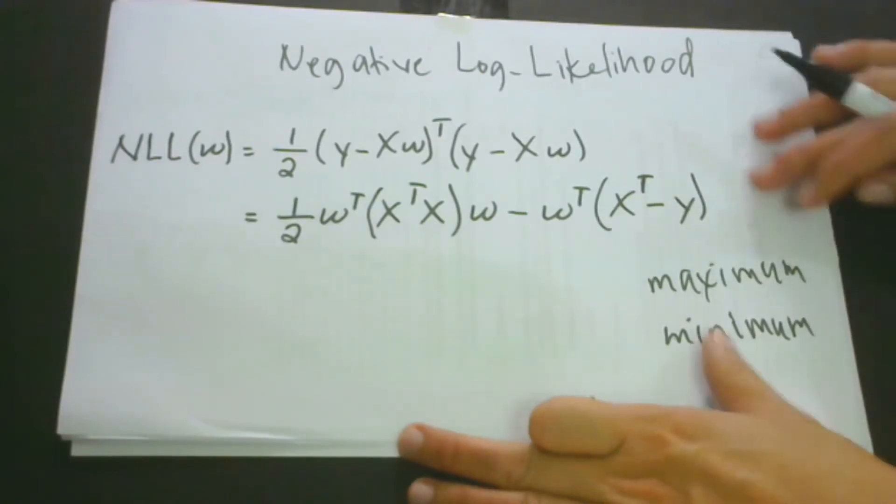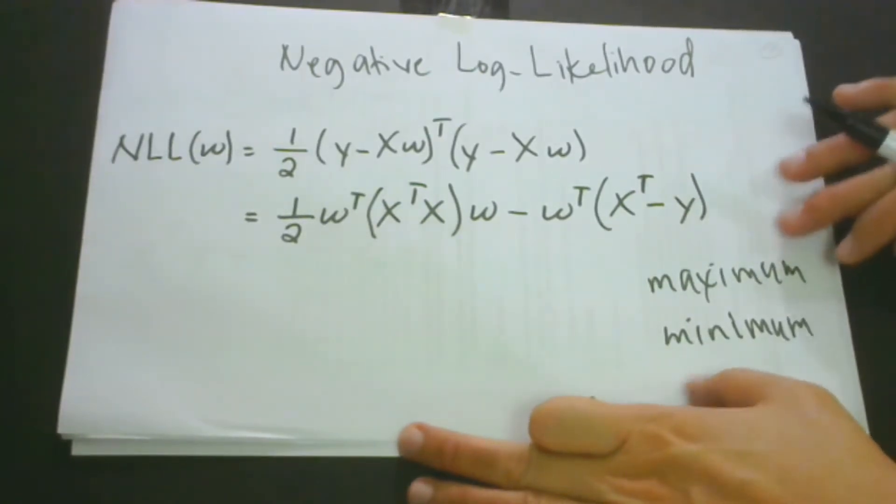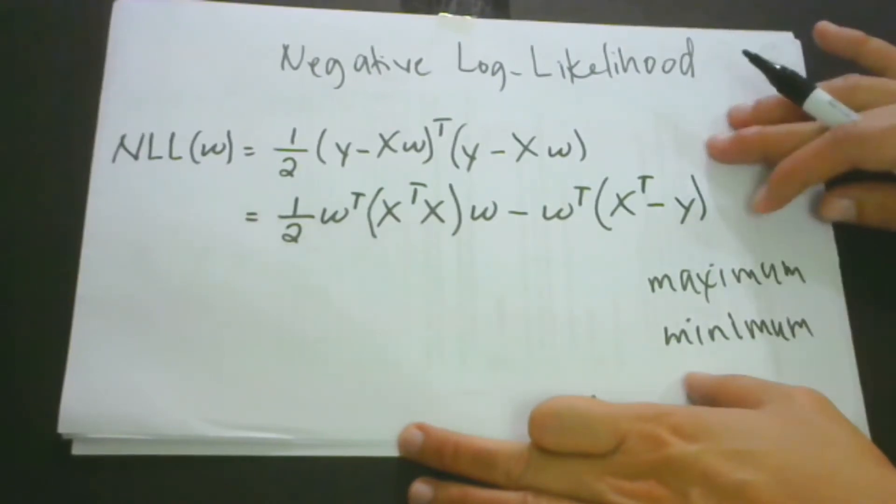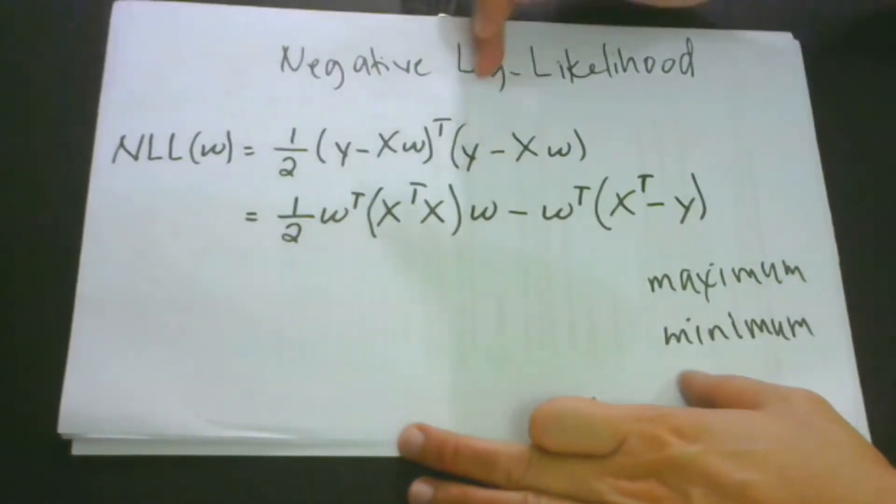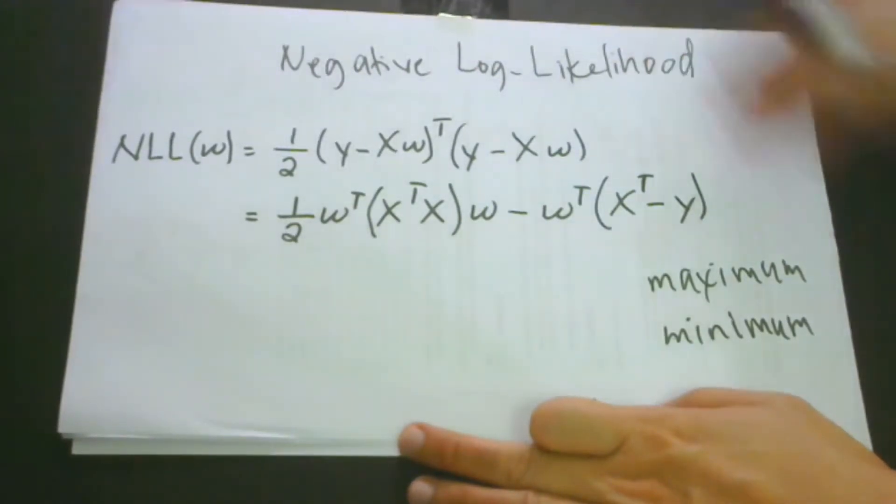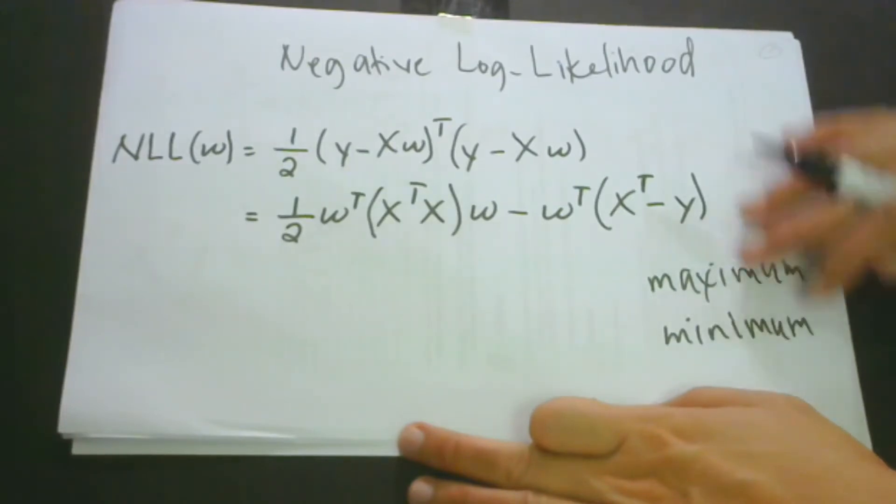When we use maximum, the tendency would be that we would overshoot. Whereas when we take smaller steps, we could use minimum and the learning rate of our model would be smoother. This is why we use the negative log likelihood to identify the minimum points to be used for parameters of our model.